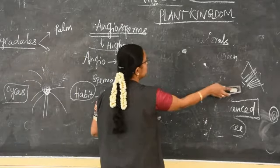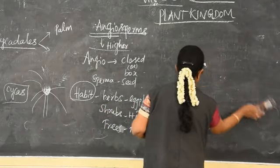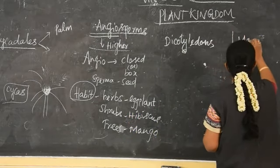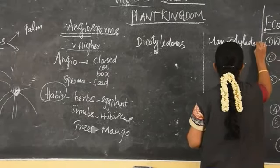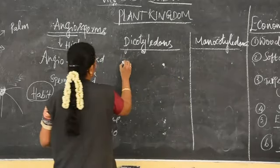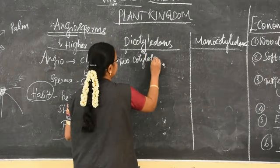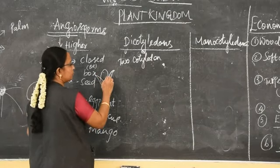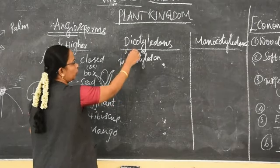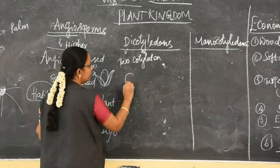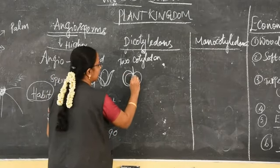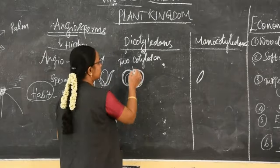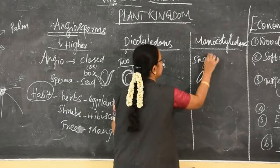Angiosperms show two types of classification: dicotyledons and monocotyledons. Di means two — two cotyledons are present. A cotyledon is the leaf which is found in the seed. Since it contains two cotyledons, it is known as dicotyledon. Mono means single — single cotyledon is present. For example, if we take a bean seed, we can split it into two — that is dicot, two cotyledons. But if we take paddy, we cannot split it into two — so it is monocot, single cotyledon.